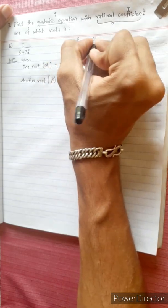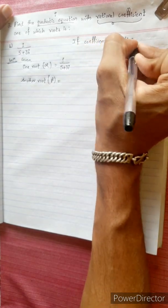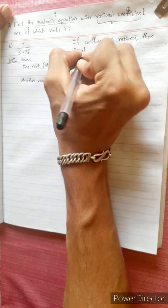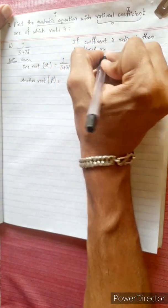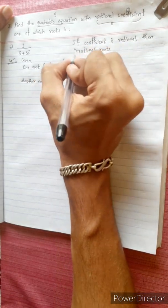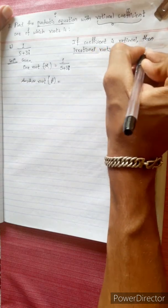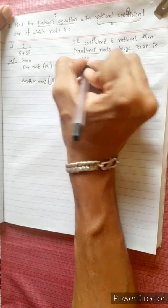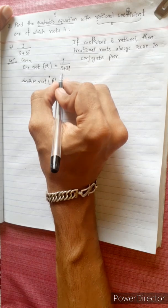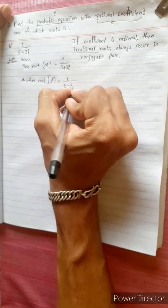If the coefficient is rational, then irrational roots — if you have an irrational or imaginary number — irrational roots always occur in conjugate pairs. So, the conjugate of 1/(5+3i) is 1/(5-3i). It's the conjugate.